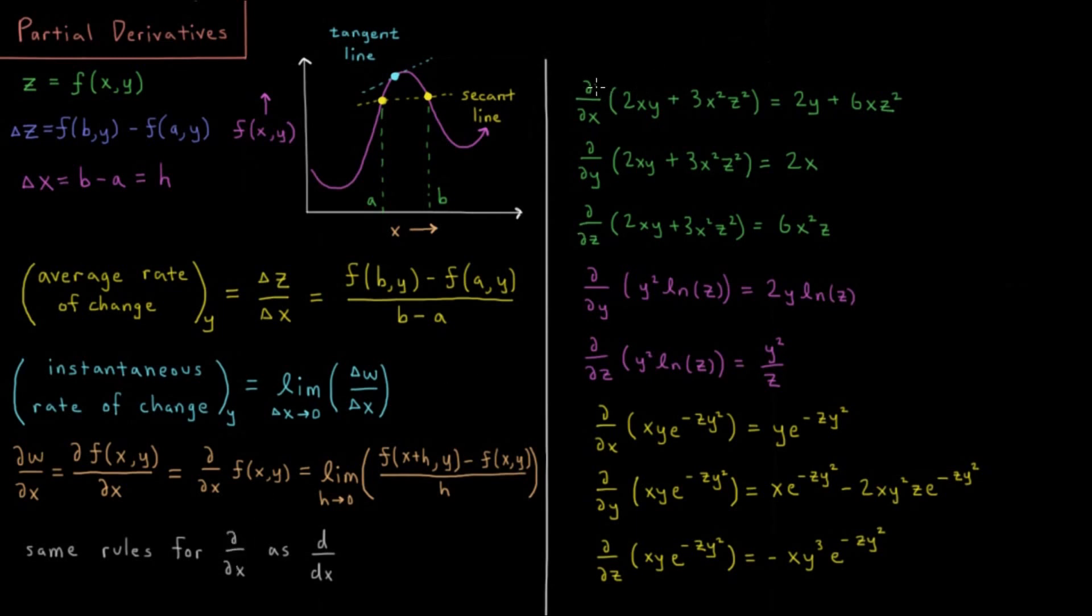If we take the partial derivative with respect to x of this function, we have 2xy—that's linear in x, so that becomes 2y. 3x squared z squared has an x squared, so that derivative is 2x, giving us 6xz squared.